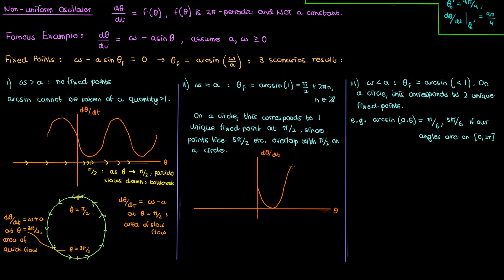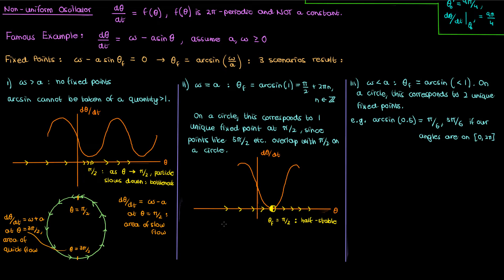In the second scenario where ω = a, there is one fixed point at θ = π/2. The phase portrait shows that the derivative is positive to the left of the fixed point, so θ wants to increase towards it from the left. To the right of the fixed point, the derivative is also positive, so θ wants to increase away from it on the right. This gives a half-stable fixed point — stable on the left and unstable on the right. On the circle, the flow is generally counterclockwise but stops at θ = π/2.